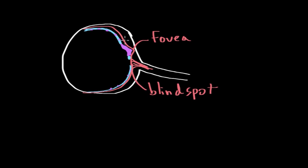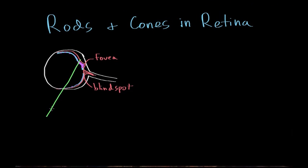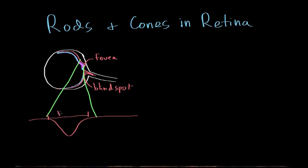Let's zoom in on the fovea to make sense of what we're looking at. If we zoomed in on the fovea, what we would see is the retina dimpling in at that region. This region here is the fovea. Rods are found outside of the fovea — there are a whole bunch of rods in the eye, specifically in the periphery, outside of the fovea.